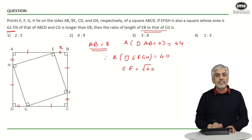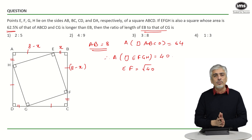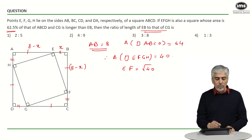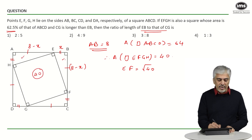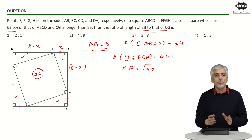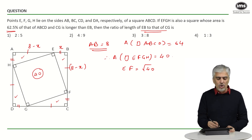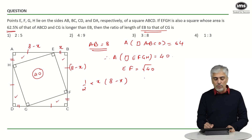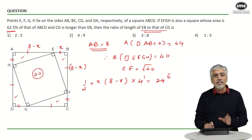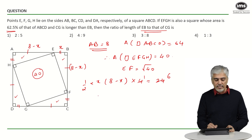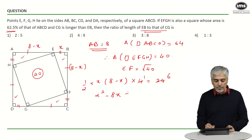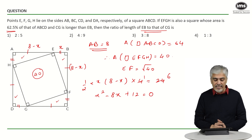If I take EB as x, then AE will be 8 minus x, and that will also be 8 minus x. The total area was 64, out of which EFGH was 40, which means the 4 small triangles have a combined area of 24, so each triangle has area 6. All triangles have the same sides x and 8 minus x. So half times base times height equals 6, giving us: half times x times (8 minus x) equals 6. This becomes x² minus 8x plus 12 equals 0.